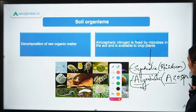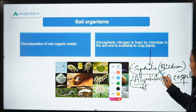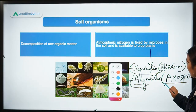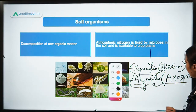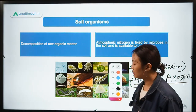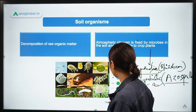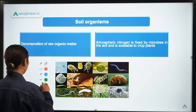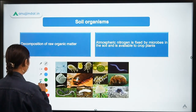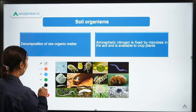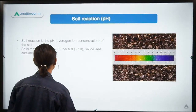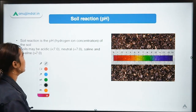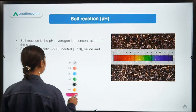As an example of symbiotic organisms we have Rhizobium, and for asymbiotic we have Azospirillum. This will be discussed in detail in later lectures.